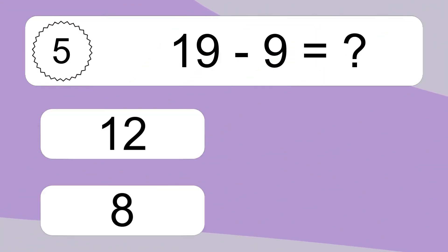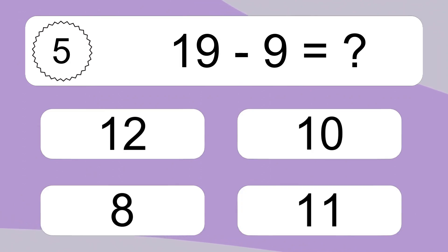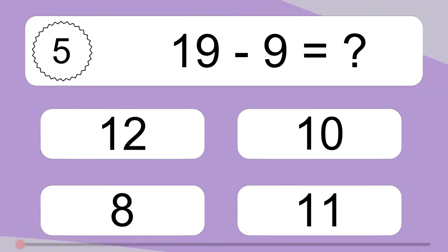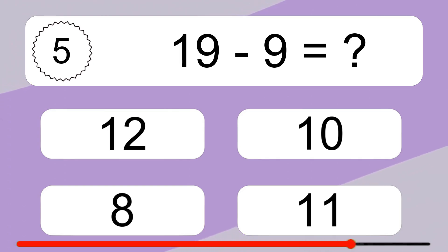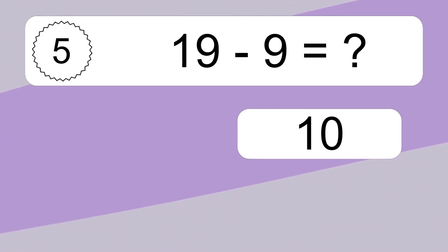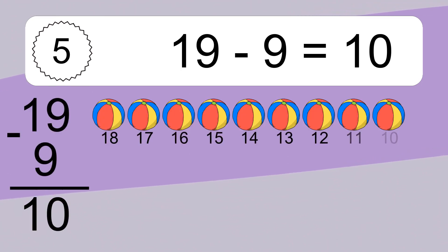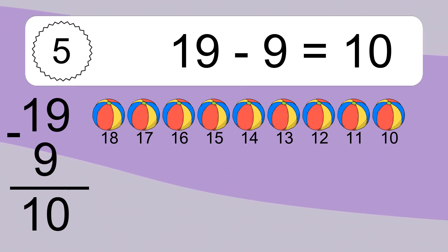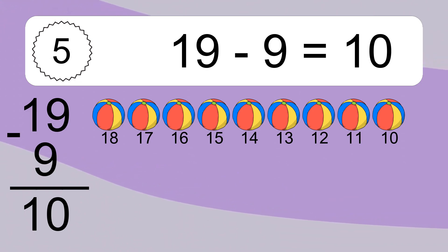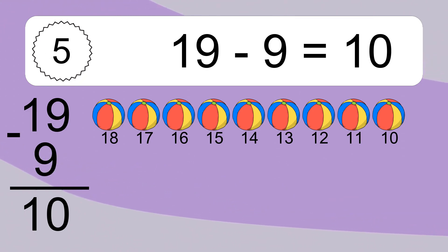19 minus 9 equals what? 19 minus 9 equals 10. Let's count it. 18, 17, 16, 15, 14, 13, 12, 11, 10.